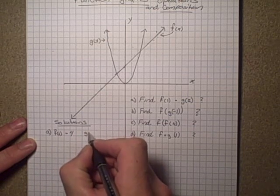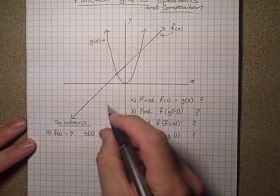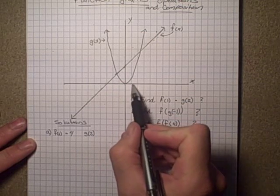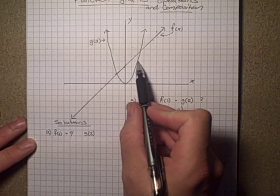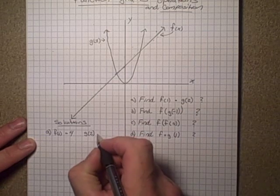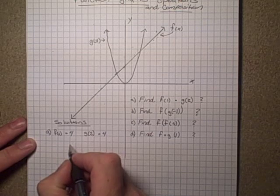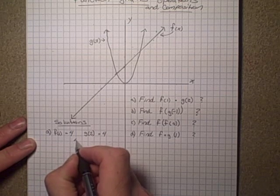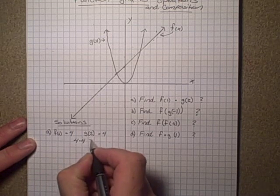We can also say that g(2), so here's 2, 1, 2, and we go and looks like it's also 4. So f(1) times g(2) is 4 times 4 which is going to be equal to 16.